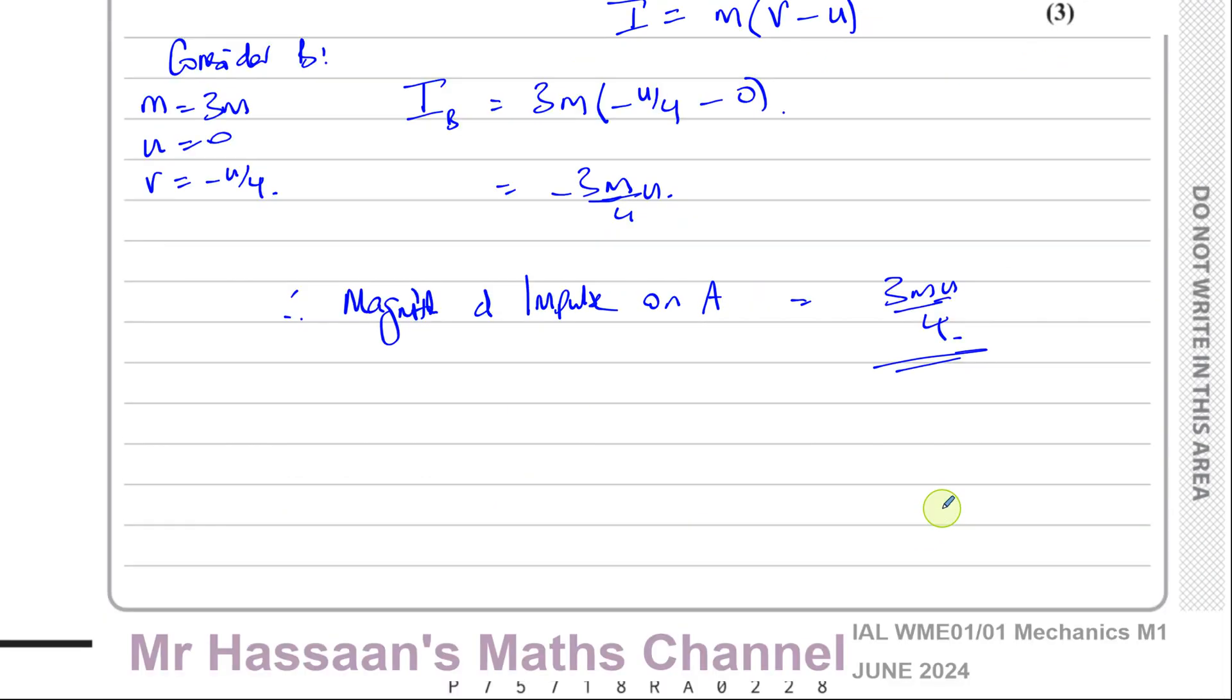And if you want to check, you want to make a little check, you can make a check by considering the impulse exerted on A. So with A, you have the mass is M. Initial speed was minus U. Final speed was minus U over four. So you're going to have M times the final speed minus U over four minus minus U. Minus the initial velocity. So that's going to be M times minus U over four plus U, which is going to be three quarters MU, because that's one minus a quarter, it's three quarters.